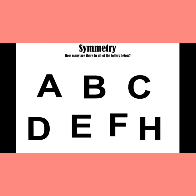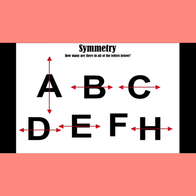Now, look at these alphabets. Letter A has a vertical line of symmetry. Letter B has a horizontal line of symmetry. In the same manner, letter C, letter D, and E. The letter F does not have a line of symmetry — there is no way to fold letter F, so we say that letter F is not a symmetrical letter. Letter H has two lines of symmetry: horizontal as well as vertical. So, shapes and letters can all have lines of symmetry.